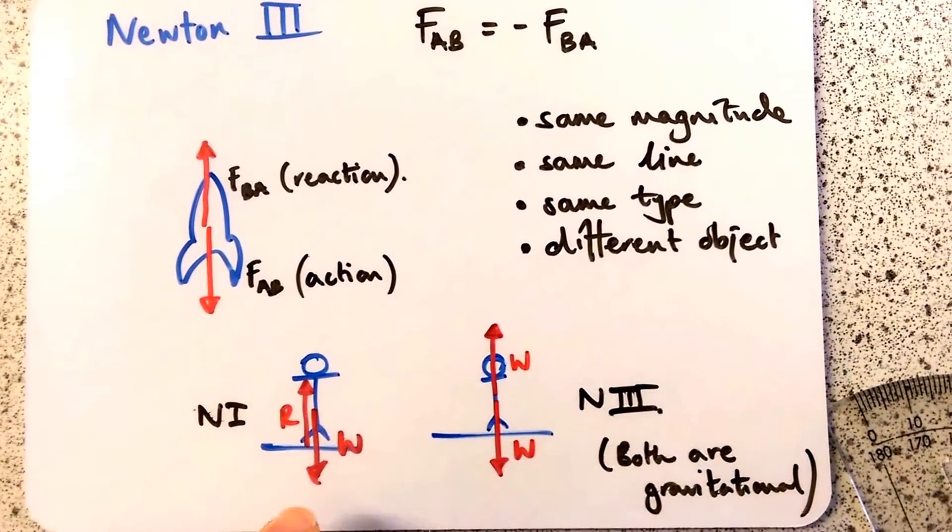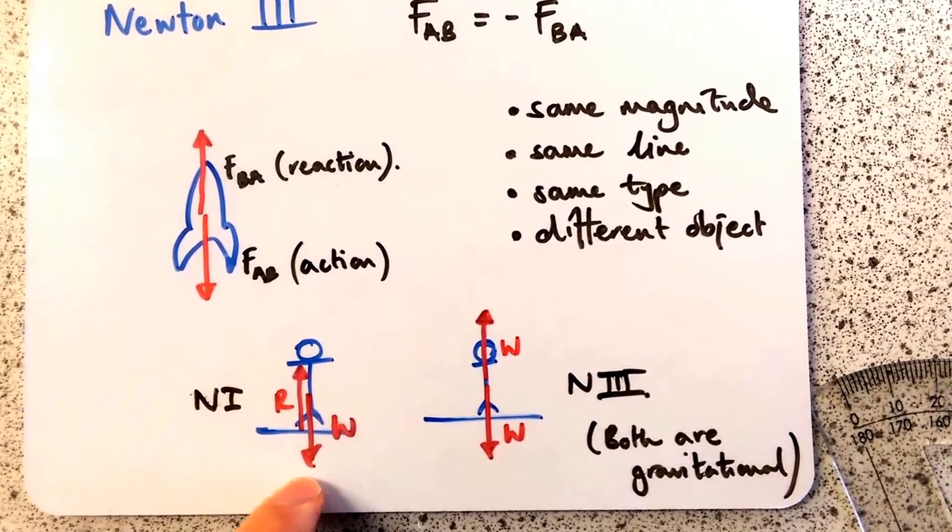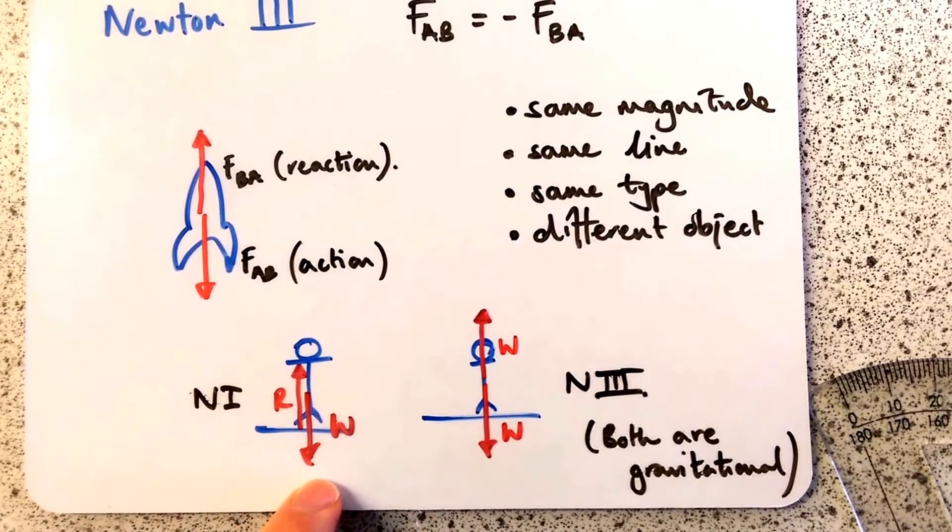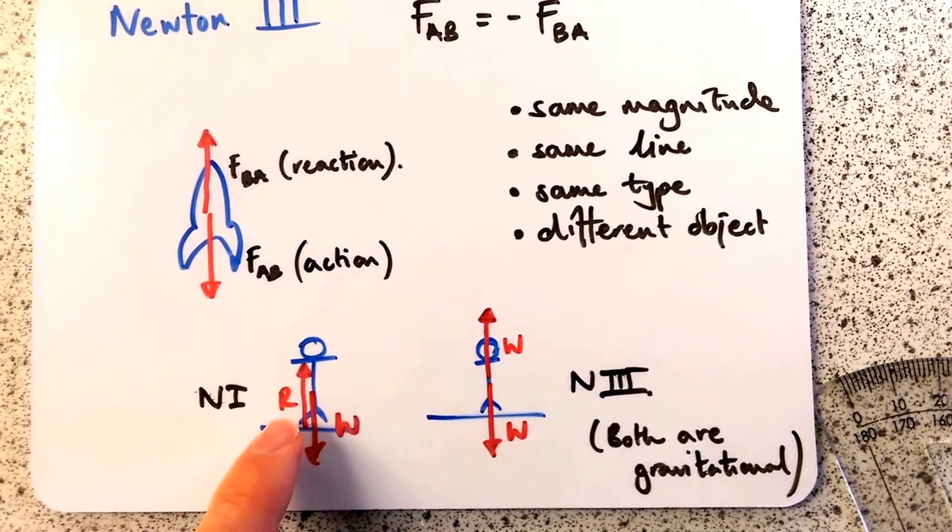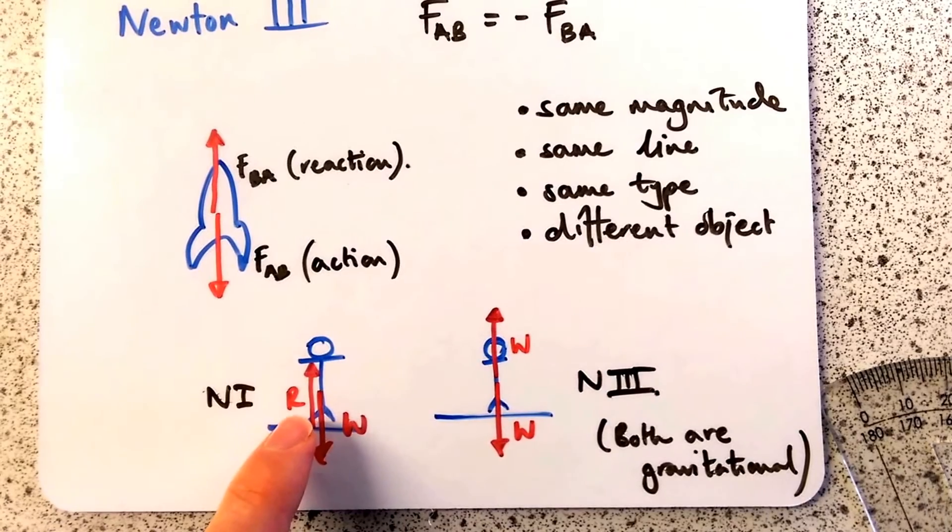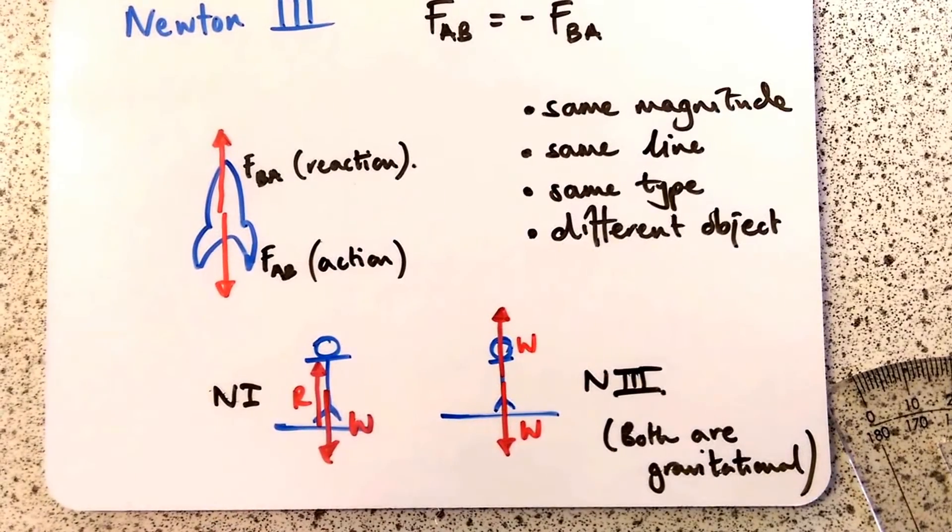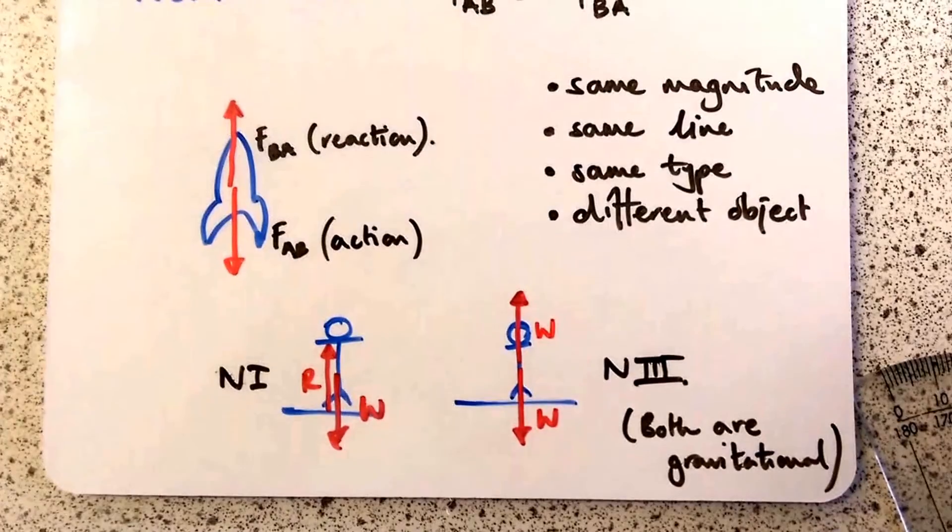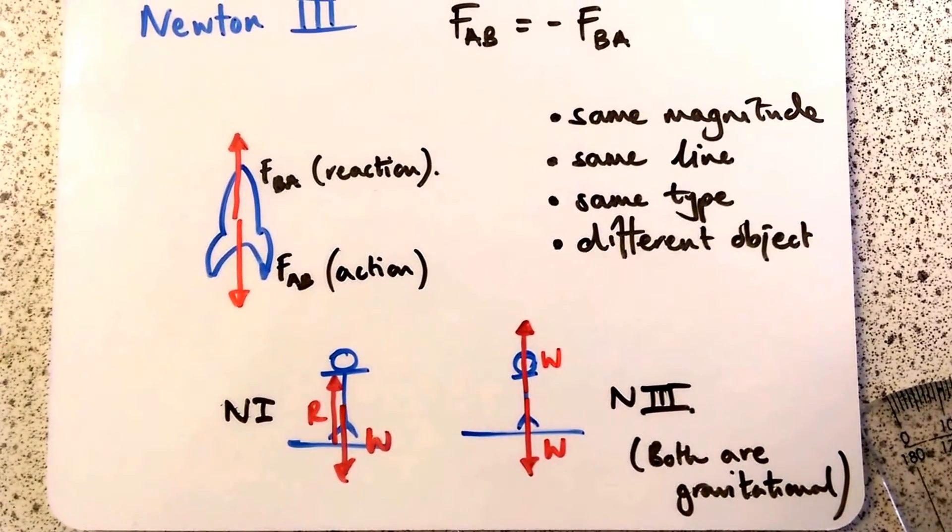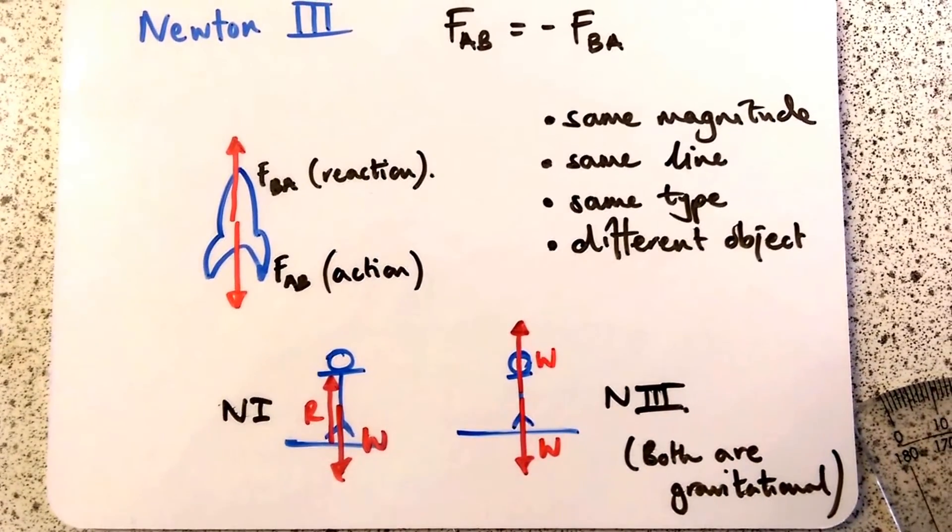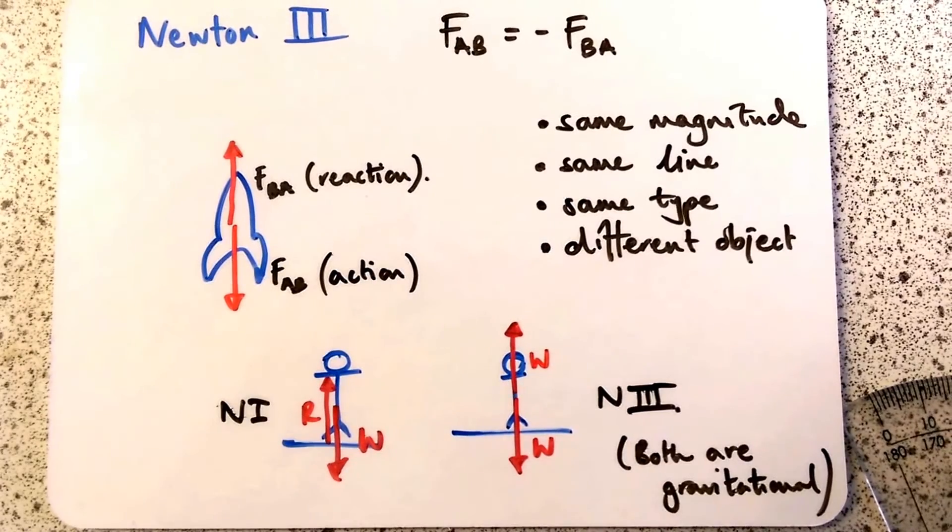They often like to trick you by saying, what's the third law pair here with the boy standing on the floor? Well, his weight is equal and opposite to the normal contact force, the reaction from the floor. But that's not a Newton III pair because they're different types. That's a Newton I pair - he's not accelerating.